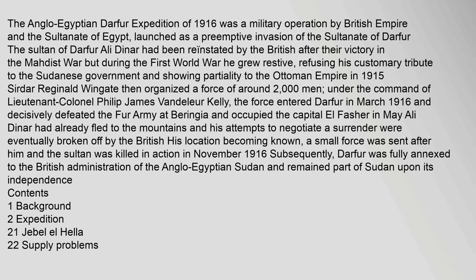The Anglo-Egyptian Darfur expedition of 1916 was a military operation by the British Empire and the Sultanate of Egypt, launched as a preemptive invasion of the Sultanate of Darfur. The Sultan of Darfur, Ali Dinar, had been reinstated by the British after their victory in the Mahdist War, but during the First World War he grew restive, refusing his customary tribute to the Sudanese government and showing partiality to the Ottoman Empire in 1915. Sir Dar Reginald Wingate then organized a force of around 2,000 men, under the command of Lieutenant Colonel Philip James Vandelier Kelly.